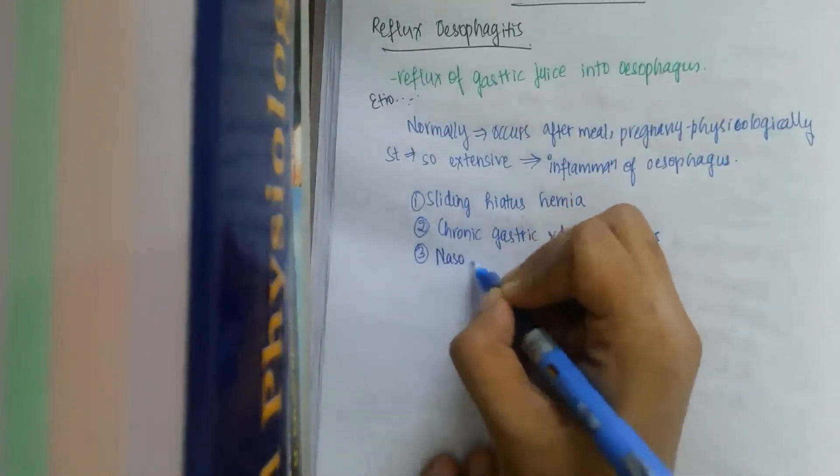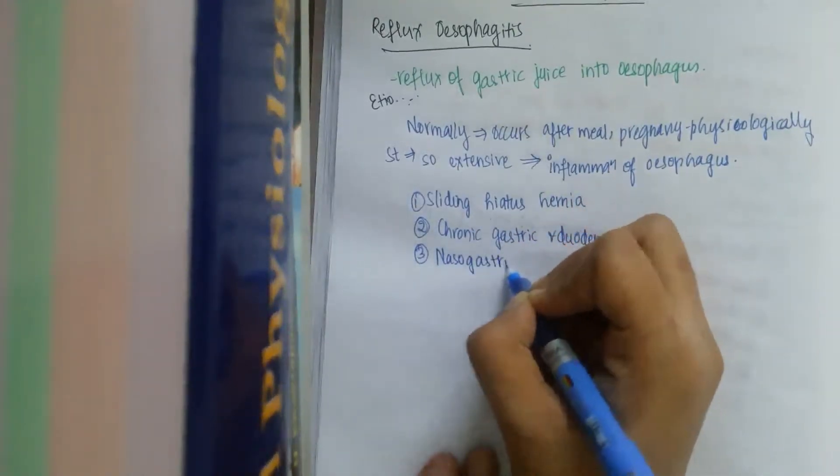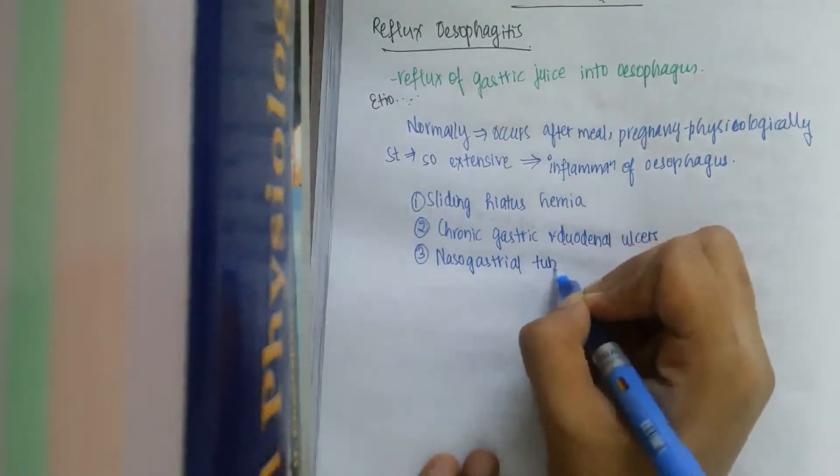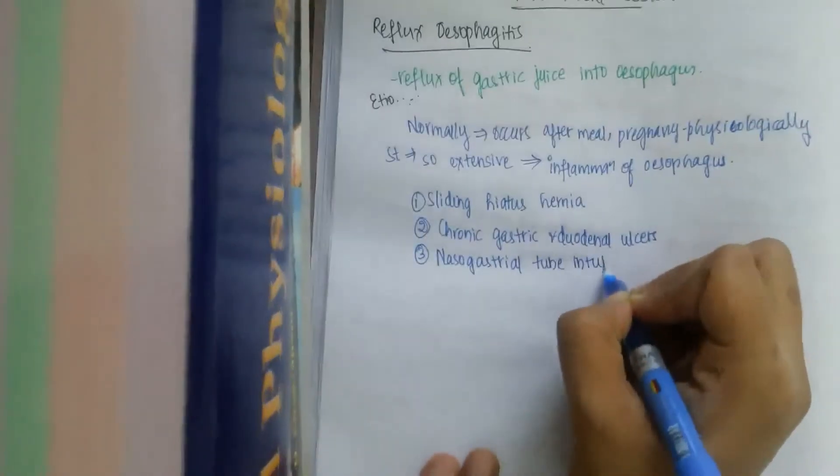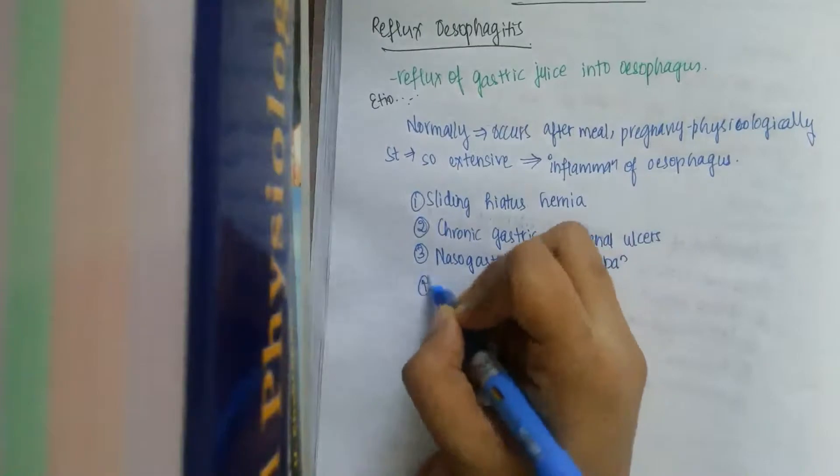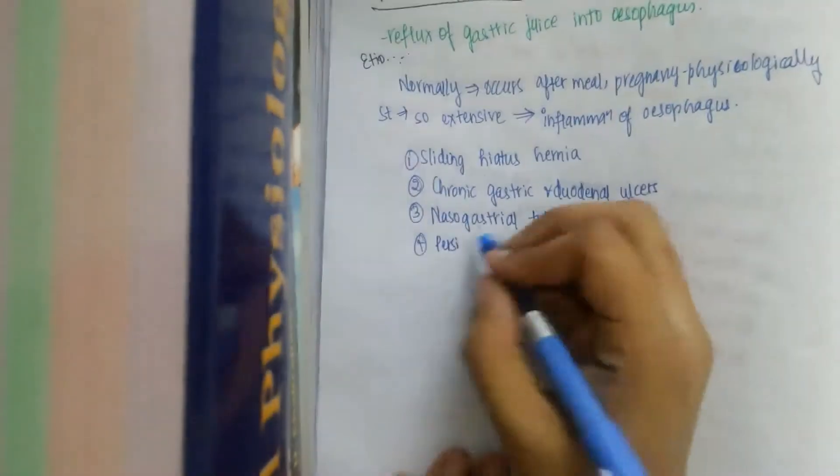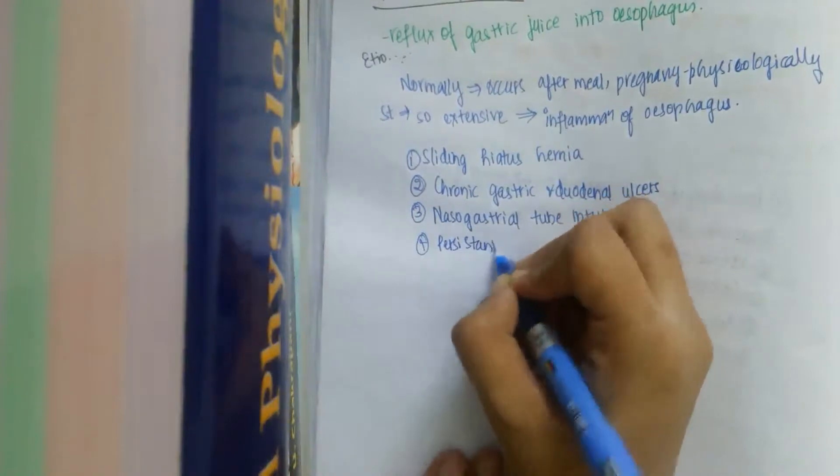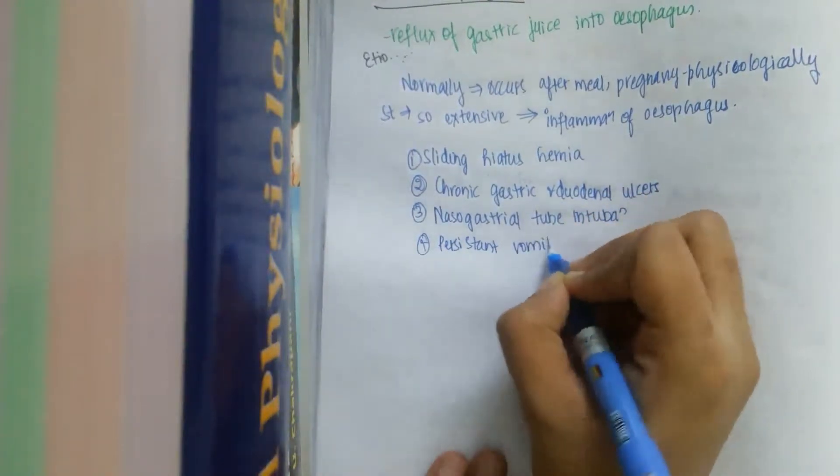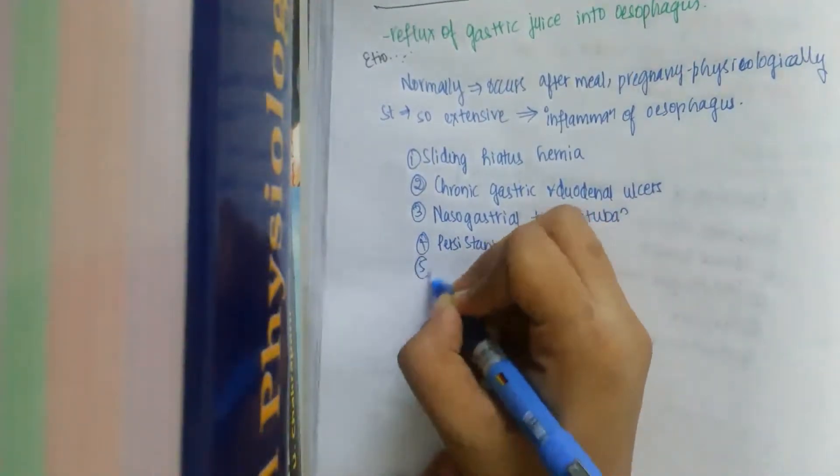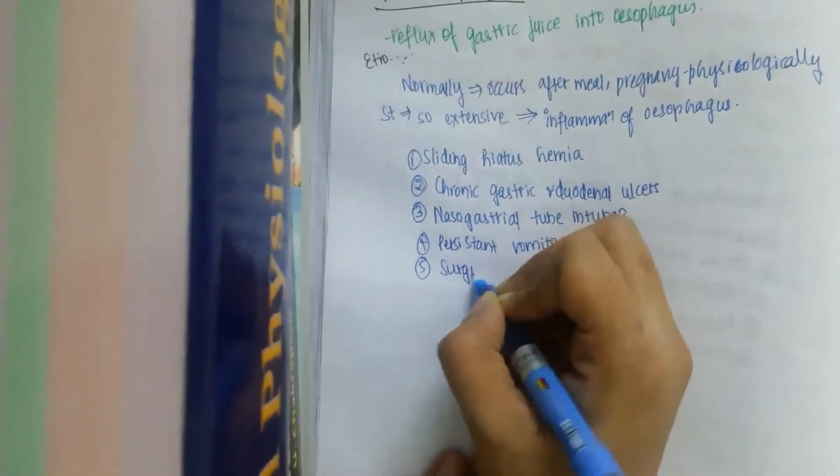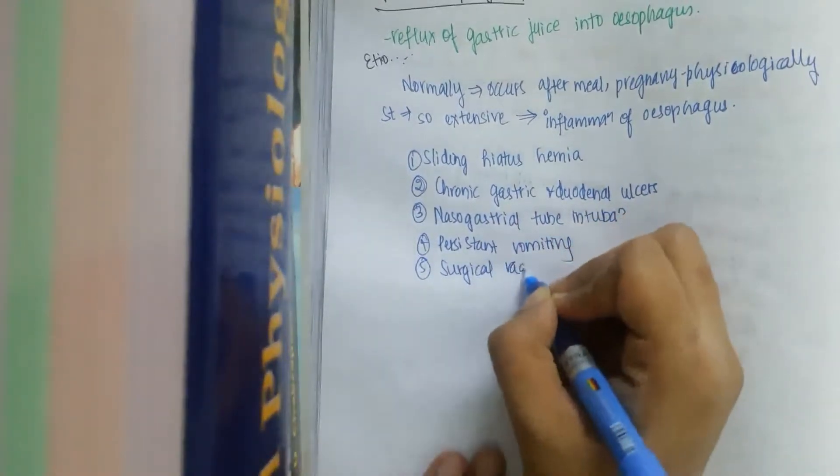Third one is nasogastric tube intubation and the fourth one is persistent vomiting which may cause the same condition. The fifth one is surgical vagotomy.